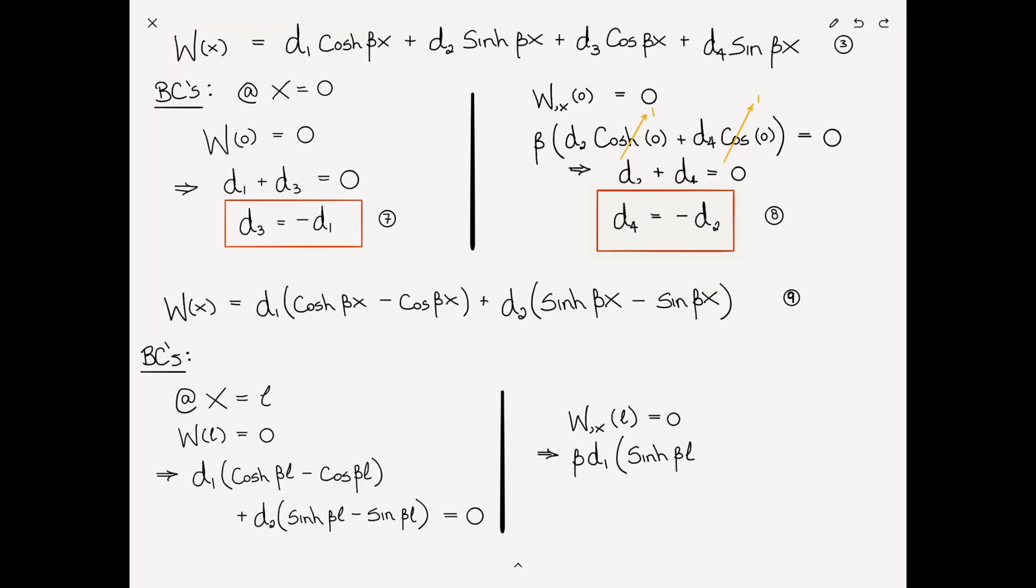And then let's just draw a line and do it alongside here. The final fourth boundary condition at x = L, the derivative W,x(L) at L = 0. As a result, β times d1 times (sinh βL + sin βL) plus β d2 (cosh βL - cosine βL) = 0. And we can cancel the βs from each term, obviously.